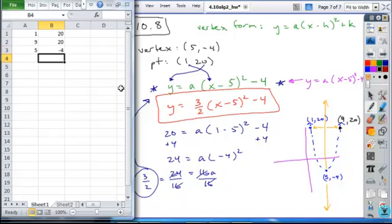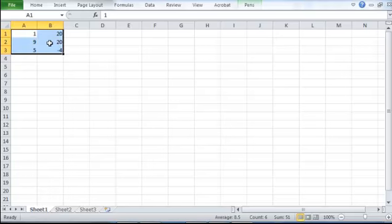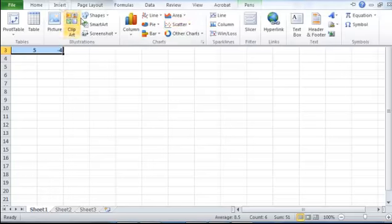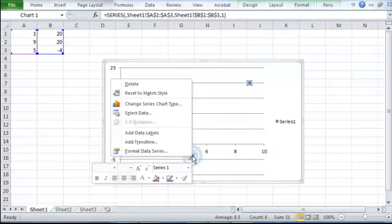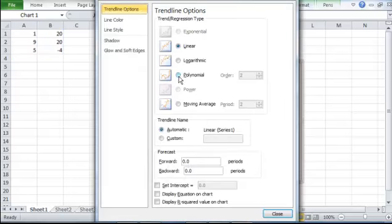Once we enter these, we can highlight the data, insert a scatter plot, right click on one of the points and add the trend line. Identify that we want it to be a second degree polynomial or quadratic regression. Display the equation.